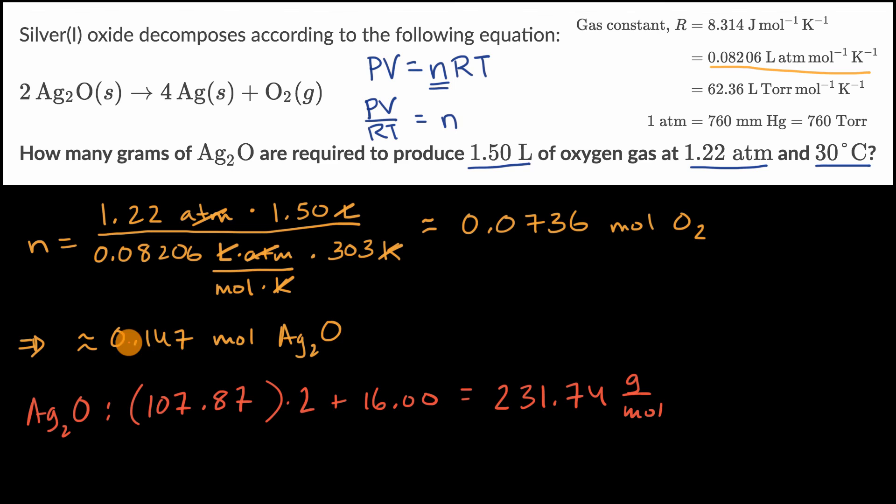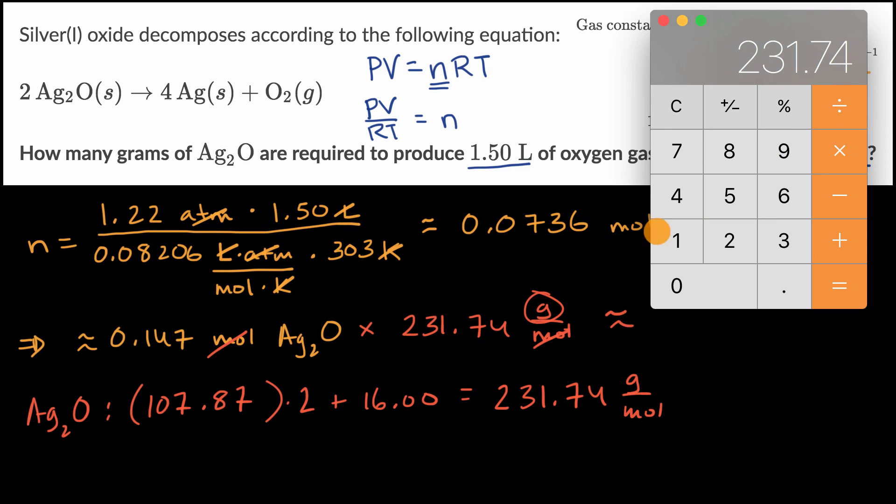Take the moles of silver oxide and multiply by 231.74 grams per mole. The moles cancel out and we're left with grams. We have three significant figures here and five here.